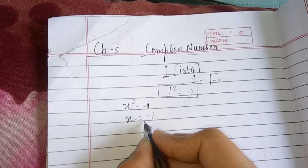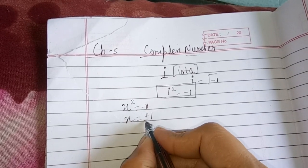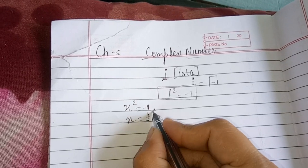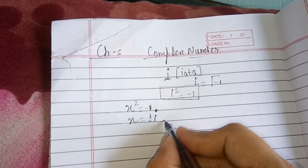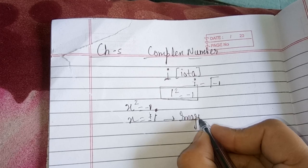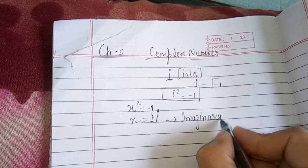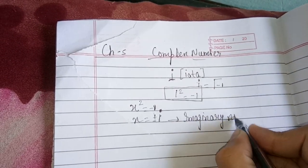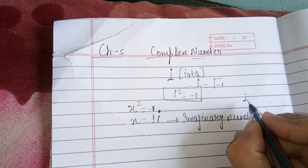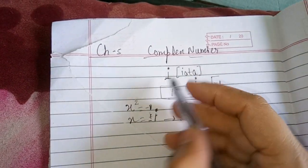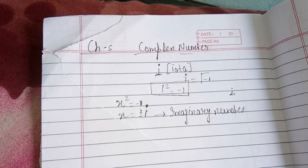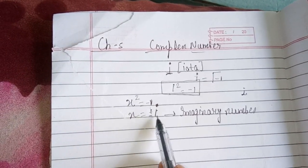It means the number under the square root can be negative. Such numbers, which involve the square root of a negative number, are called imaginary numbers. This is the definition of imaginary numbers.